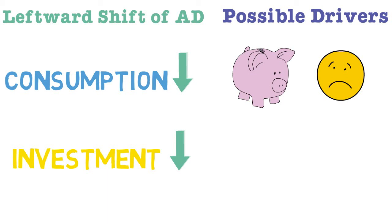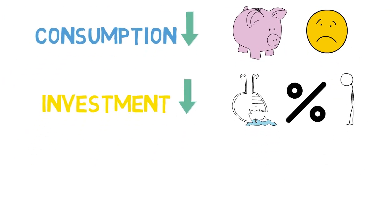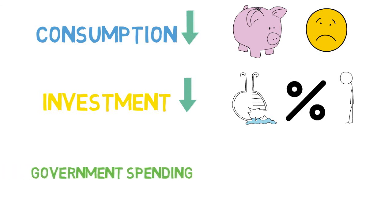Investment from firms may also decrease and shift the AD curve to the left. Companies may decrease research and development expenditure because their profit levels are dropping, perhaps due to recession. From a tax perspective, if corporation tax has increased, there will be less money left over to invest. If business sentiment has dropped and companies are not as confident about future demand conditions, they may scale back investment, shifting the AD curve to the left.